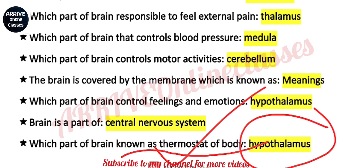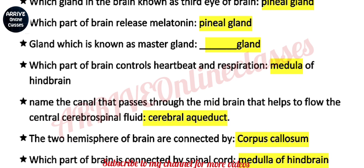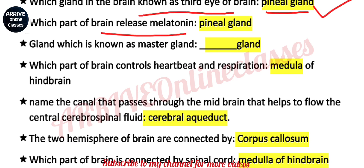Next question: which gland in the brain is known as the third eye of the brain? The answer is the pineal gland. It is a small gland located in the middle of the brain. Which part of brain releases melatonin? The answer is the pineal gland. Melatonin is responsible for pigment creation.